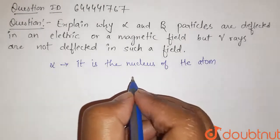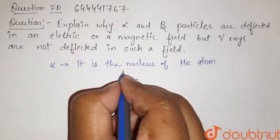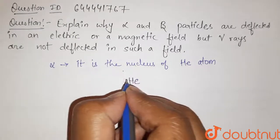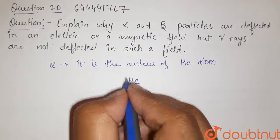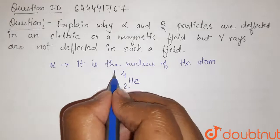So in helium atom, we have two protons and two neutrons. Therefore, its atomic number is 2 and its mass number is 4. So it is helium atom.